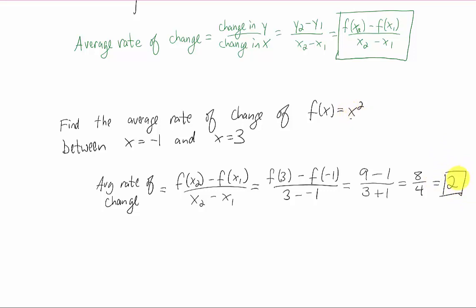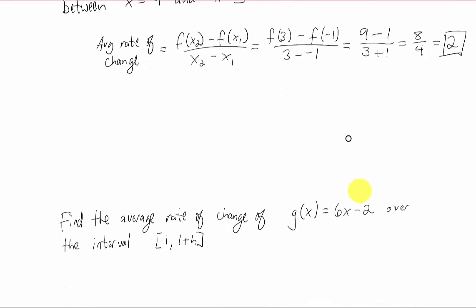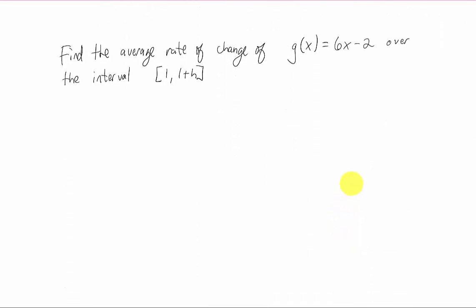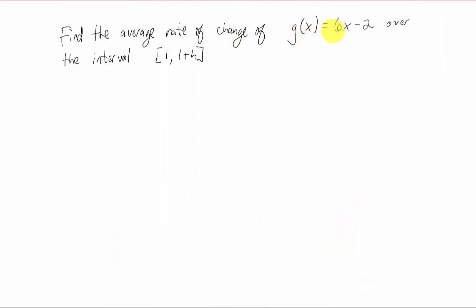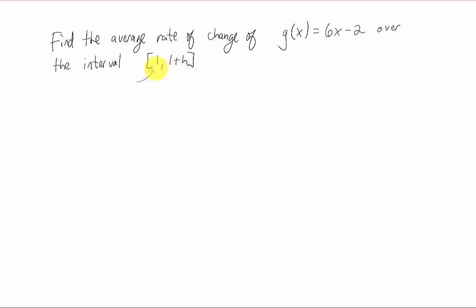Now if we had units in our problem here, we would end up with the y value units divided by the x value units. All right, let's do one more with some tricky notation, and we'll be finished. Find the average rate of change of g of x equals six x minus two over the interval between one and one plus h.